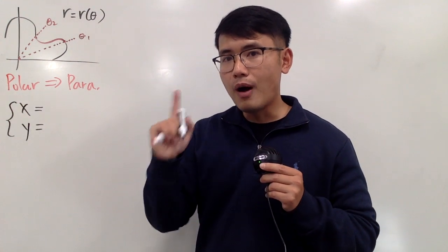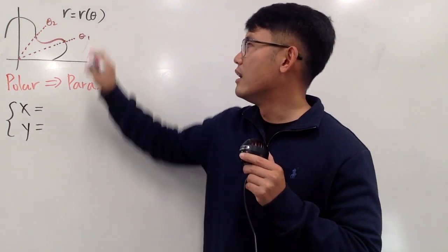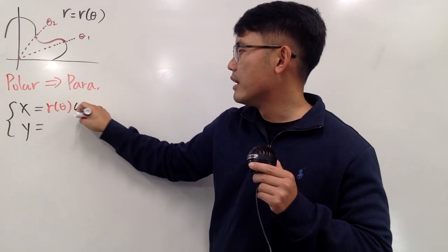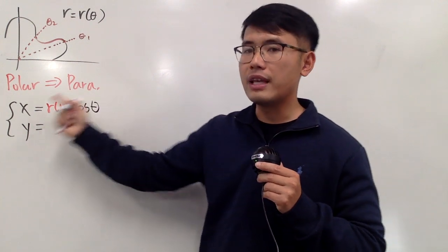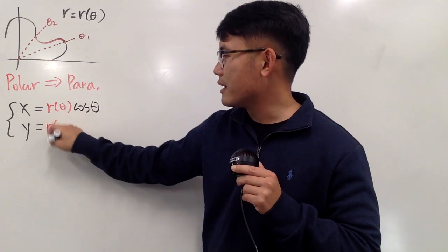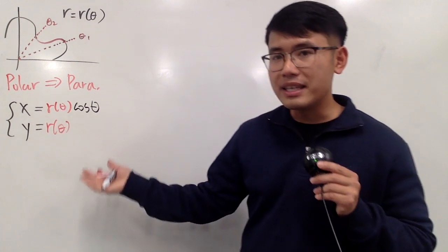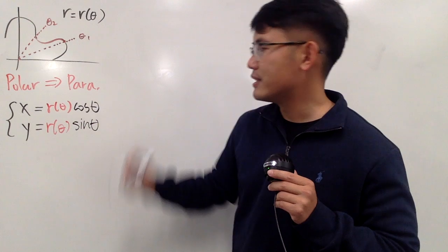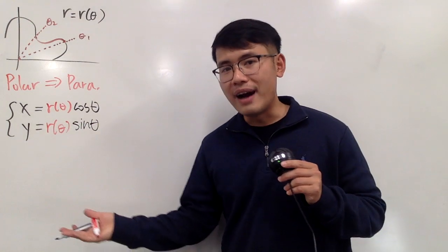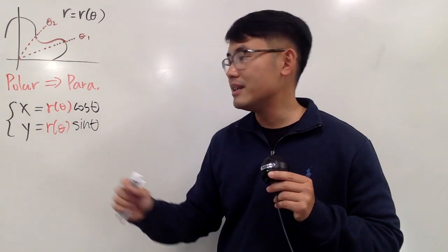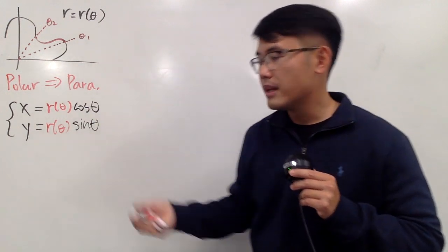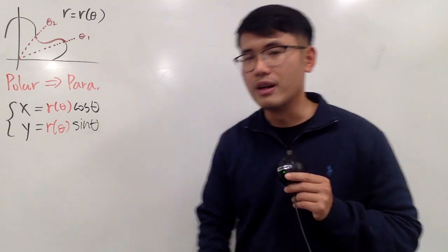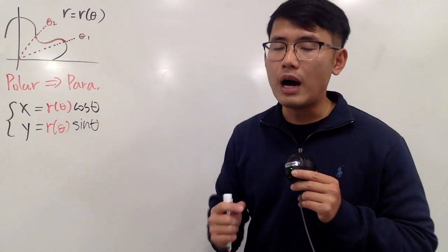x is R times cosine theta, but since R is a function of theta, we write R(θ) multiplied by cosine theta for the x component. For y, we do the same thing: R(θ) multiplied by sine theta for the y component. We find the arc length using this parametric equation, and we are using theta as our parameter.